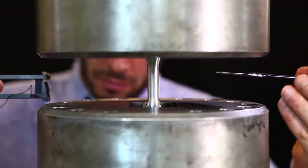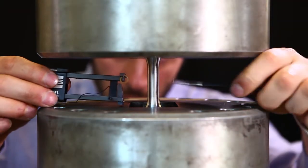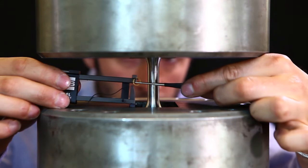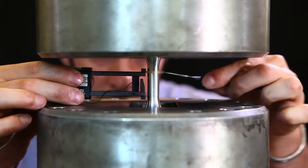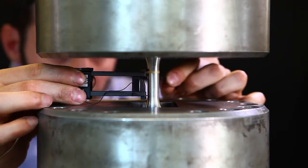The second test shown in this video is about a high-strength aluminum alloy. Again, the specimen is placed between the testing heads and the extensometer applied.